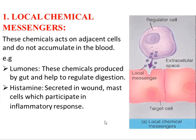Looking at the diagram, we can see that the regulatory cells are secreting local chemical messengers, and the target cells are adjacent to the regulatory cells — meaning the target cell is next to or near the regulatory cells. They release the chemical messengers which have an effect on the target cells.